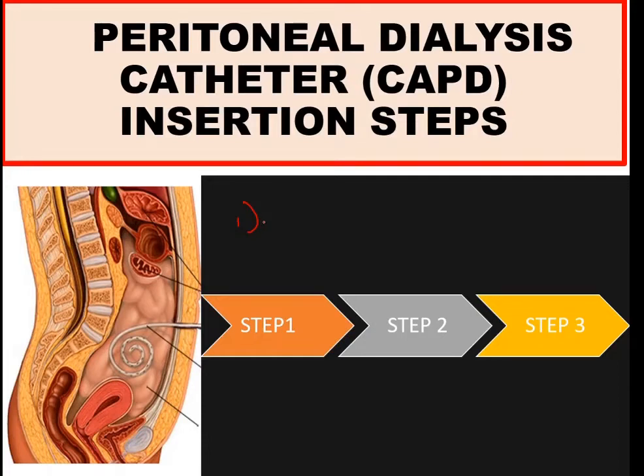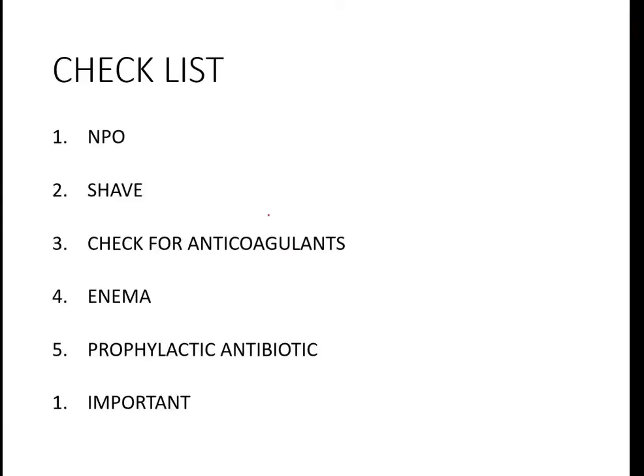Through representative clips and photos, this is about the insertion of the soft catheter — the Tenckhoff catheter — which can be used for both acute and chronic peritoneal dialysis. Before going into the insertion steps, we have to make sure of the following important preparatory steps.